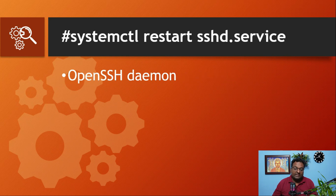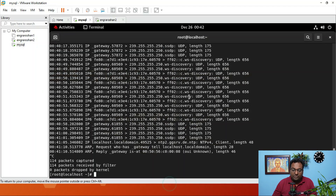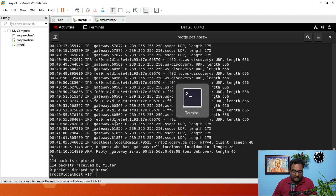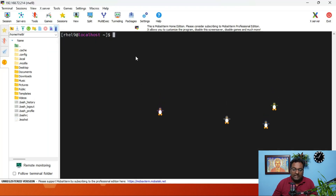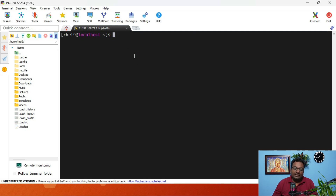The next command is the sshd service. SSH — secure shell — is used to connect to any machine or virtual machine. It is mainly for the OpenSSH daemon, which is sshd, where 'd' stands for daemon. If you have to restart your sshd service — let me show you. This is my virtual console, and this is MobaXterm, or normally SSH client like PuTTY. It's a remote login client, also called an SSH client.